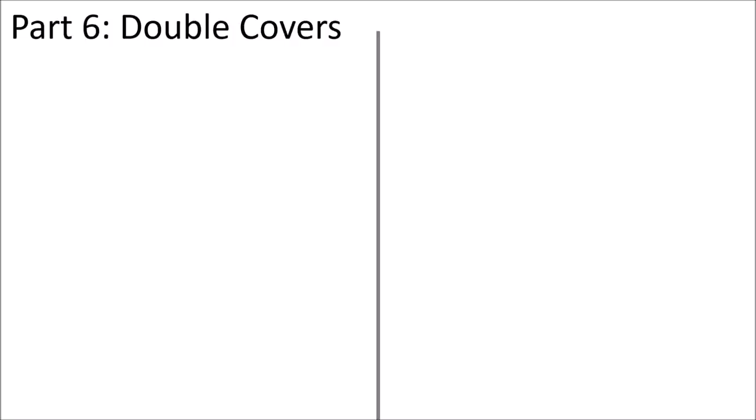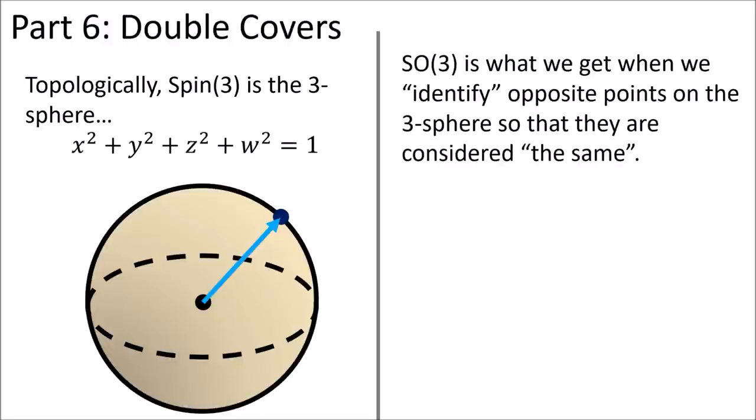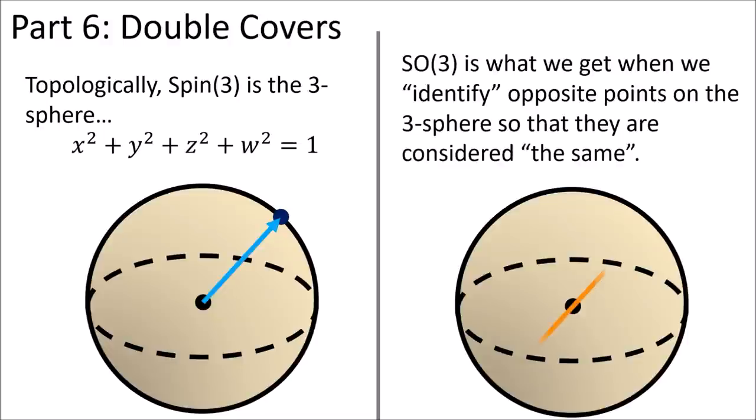In part six I talk about how the spin groups are the double covers of the rotation groups. So the Spin(3) group has the topology of the 3-sphere and we get the SO(3) rotation group by saying points on opposite sides of the 3-sphere are equivalent.